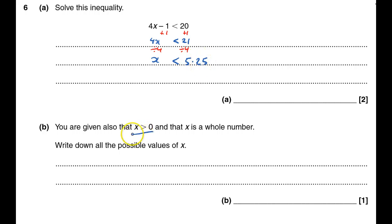You're also told that x is greater than 0 and that x is a whole number. So x is greater than 0 but less than 5.25.